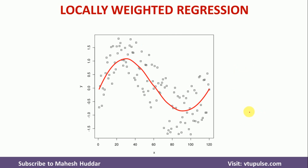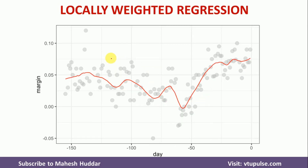Now we will take some examples to understand the locally weighted regression algorithm. You can see some data points here — we need to find a line, whether it's a straight line or a curve, which will fit to the given data. Similarly, we have another set of data points, and we draw a line that fits that data.